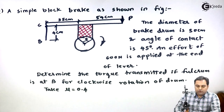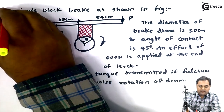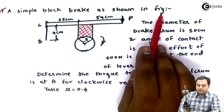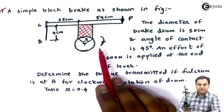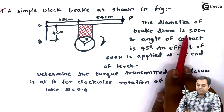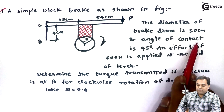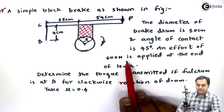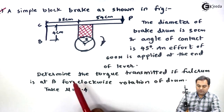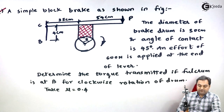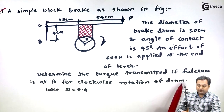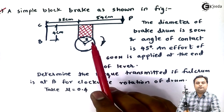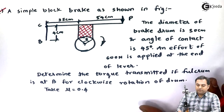Let us take the next question on block brake. A simple block brake as shown in the figure — the diameter of the brake drum is 30 centimeters, angle of contact is 45 degrees, and an effort of 600 Newton is applied at the end of the lever. Determine the torque transmitted if the fulcrum is at B for clockwise rotation of the drum. Take mu equal to 0.4.